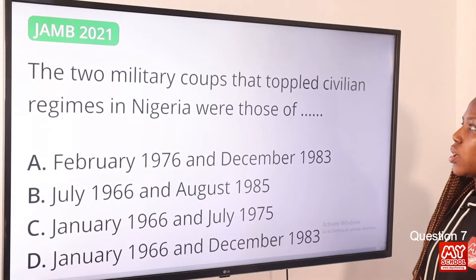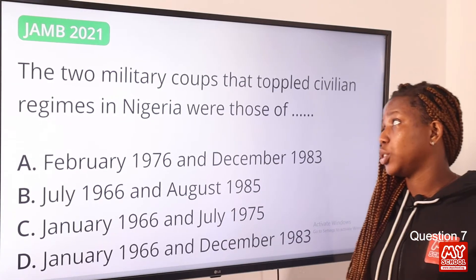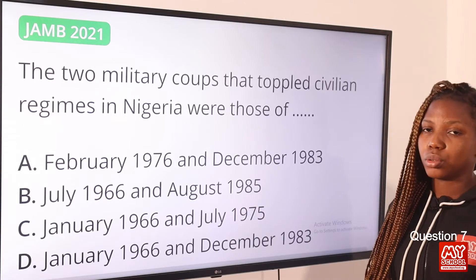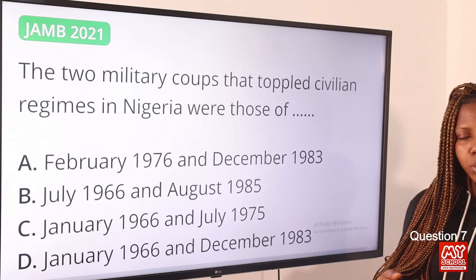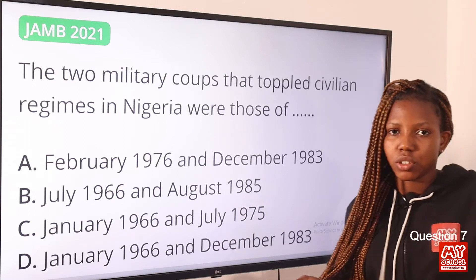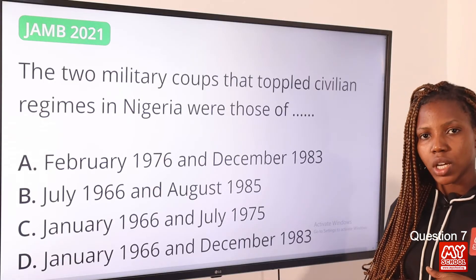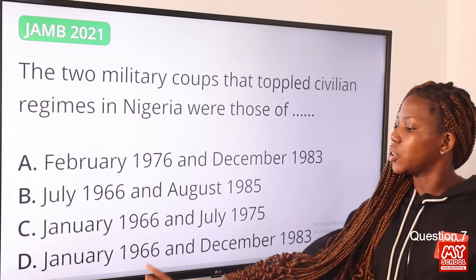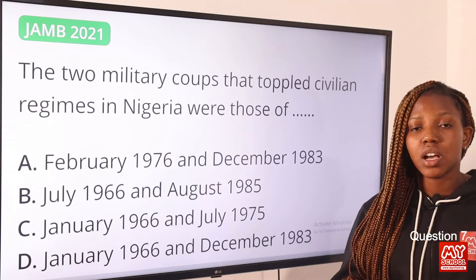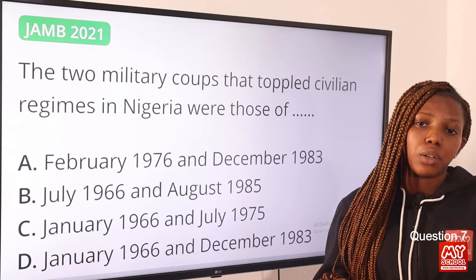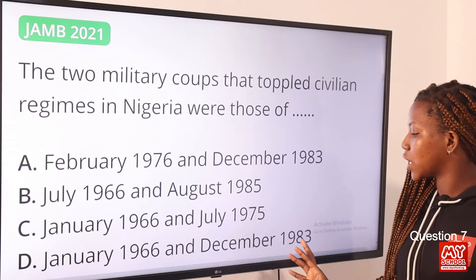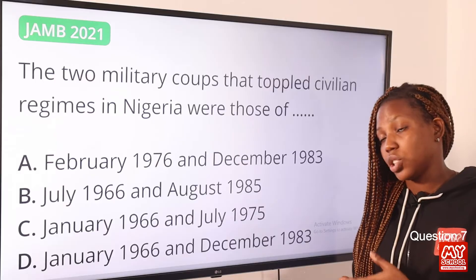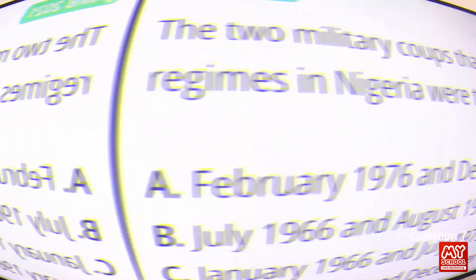Question seven: The two military coups that toppled civilian regimes in Nigeria were those of — the answer is option D. The January 1966 coup overthrew Tafawa Balewa's civilian government, and the 1983 coup overthrew Shehu Shagari's civilian regime. Note: some coups overthrew military governments, but these two specifically overthrew civilian governments.